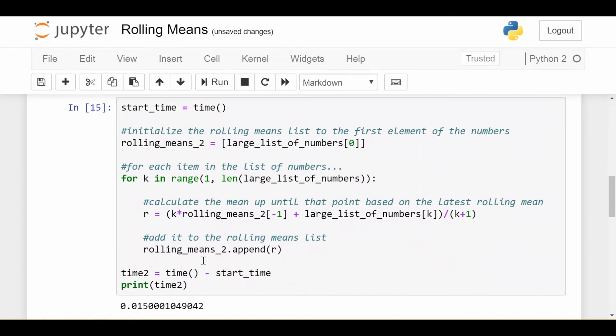This starts in very much the same way by initializing a timer. Then we start a rolling means two list. It's called rolling means two because this is our second attempt at solving this problem. And it's not empty here. We're going to initialize it as the first element of our list of numbers because remember the first element is always the same as the first rolling mean. Now we do a slightly modified for loop. So for each k in one to length large list of numbers. So we're doing one less iteration here. The reason being because we already have one item in here.